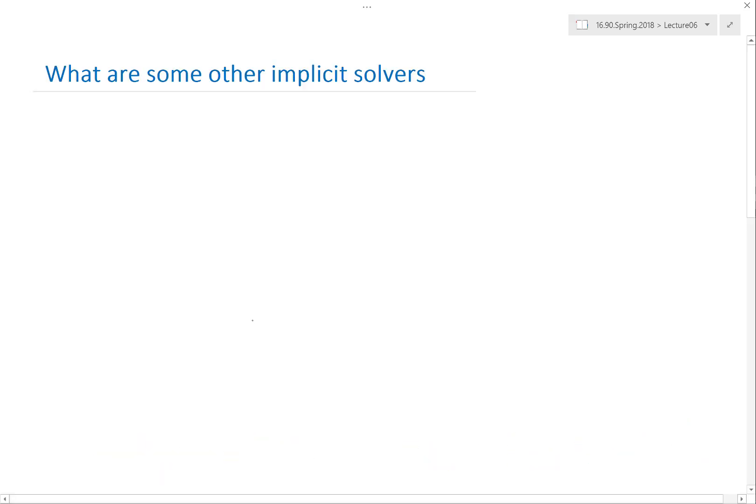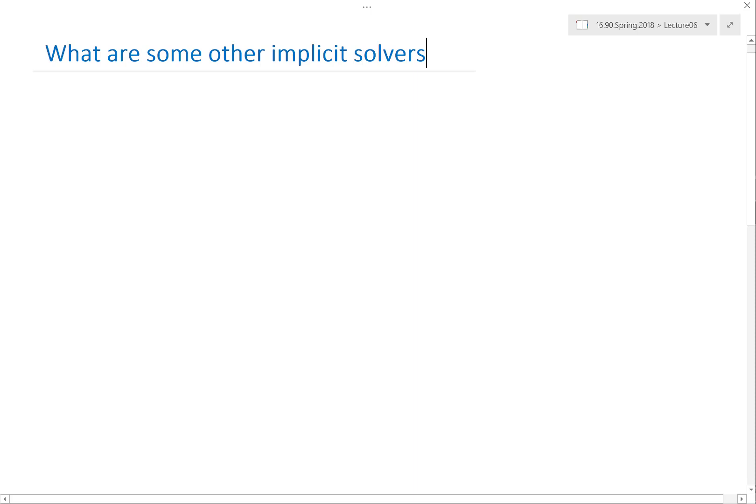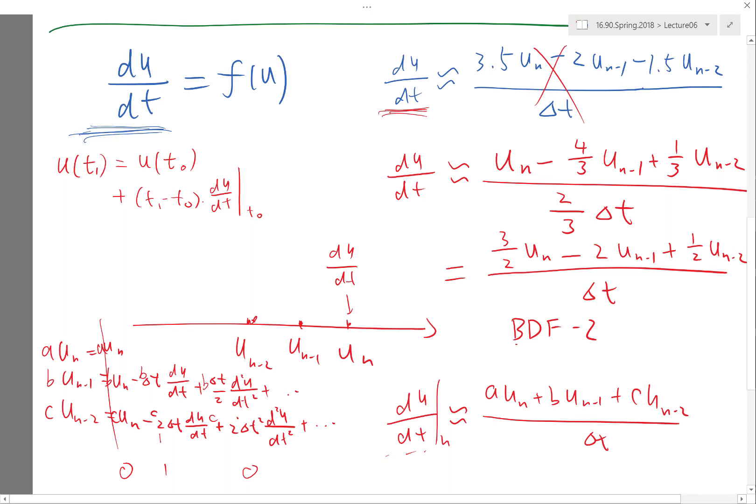Now let's actually look at another implicit solver that is also second order but is actually single step. That seems interesting, right? How do you achieve the second order which you guys spent so much time deriving without involving u_{n-2}? If you involve u_{n-2} it will be a multi-step scheme. A single step scheme means you cannot involve u_{n-2}. You are allowed to only use u_{n-1} and u_n. How do you do that? Any ideas?